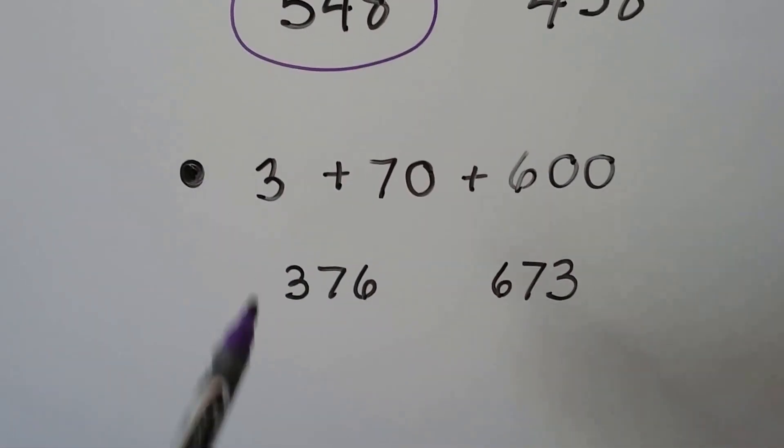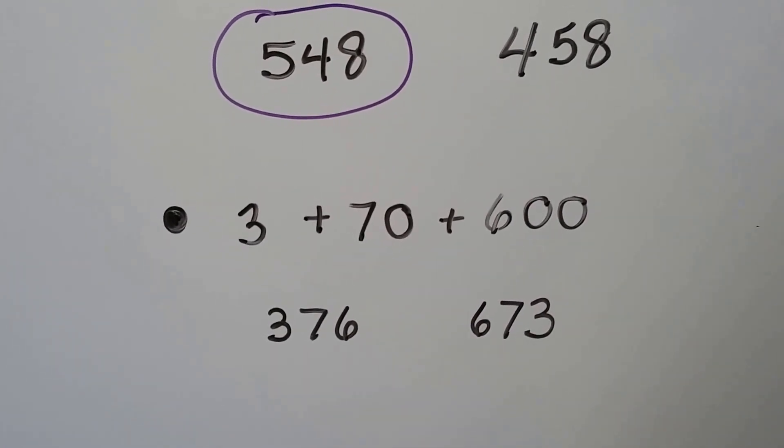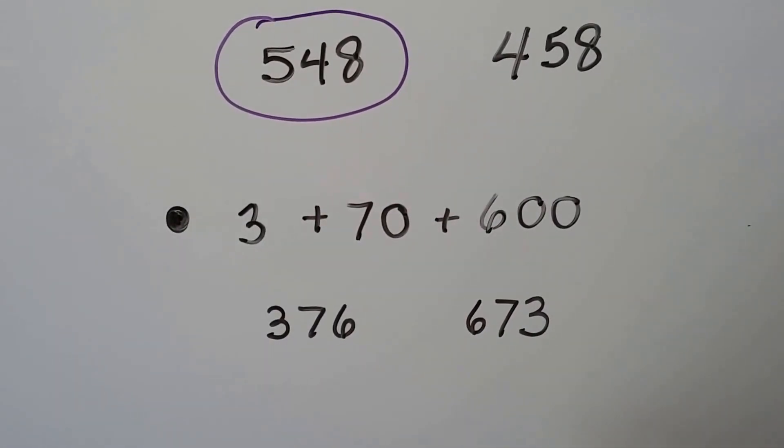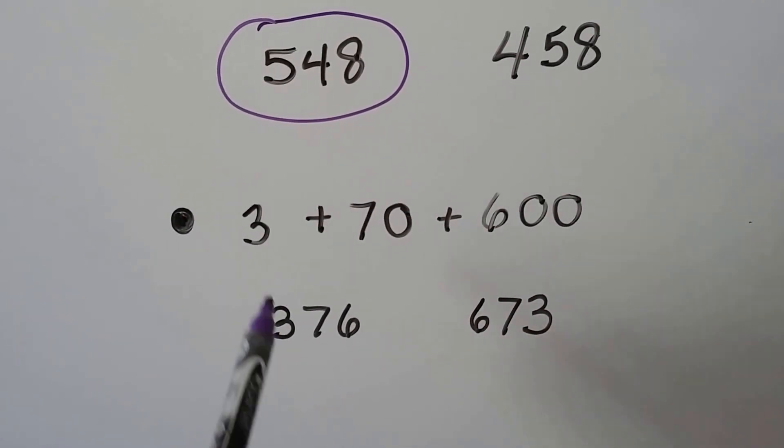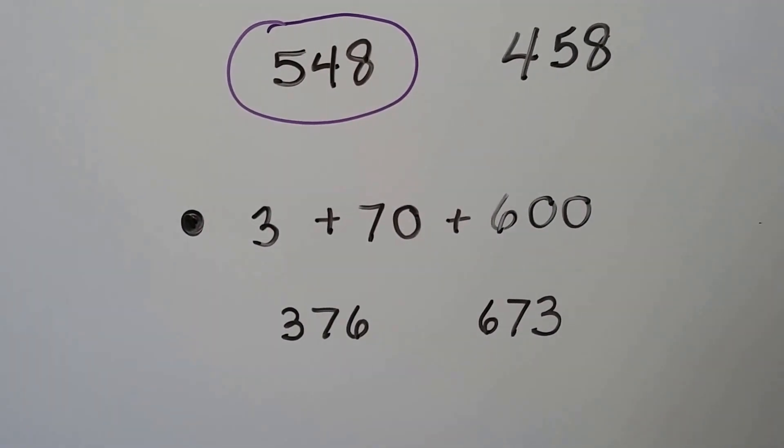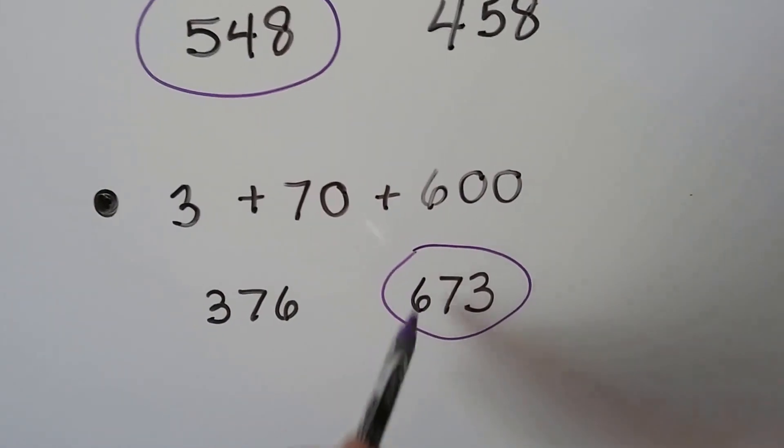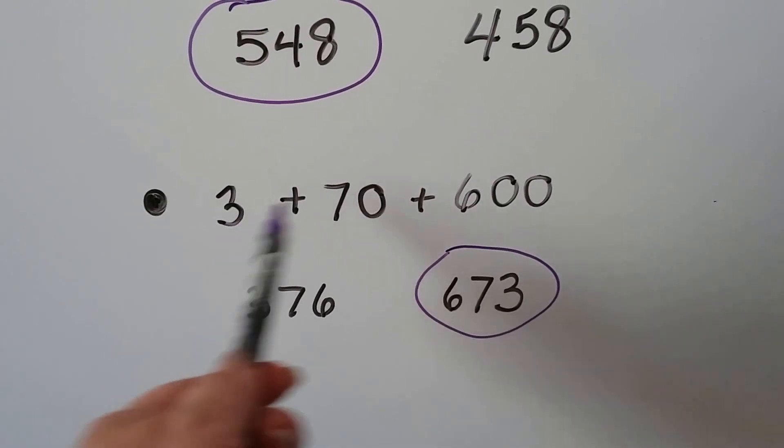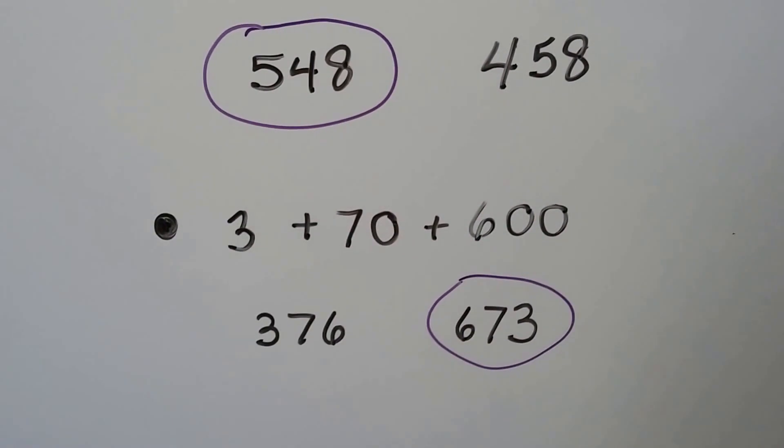Let's try another tricky one. We have 3 plus 70 plus 600. Do you think it's 376 like this one? What digit is in the ones place? That's just 3 ones. That's 7 tens, and that's 6 hundreds. So if you said this one, you're right. We have a 6 in the hundreds place, a 7 in the tens place, and a 3 in the ones place. It was written in a different order. When you add numbers, they could be in any order.